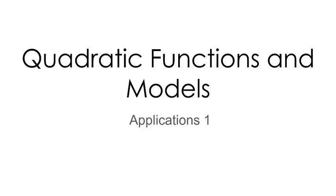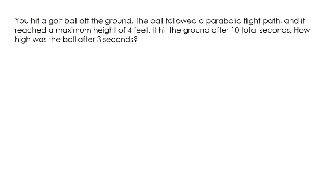In this video we're going to look at some applications or word problems involving quadratics, specifically vertex form. This one says you hit a golf ball off the ground. The ball follows a parabolic flight path, meaning it's a quadratic, and it reaches a maximum height of four feet. It hit the ground after 10 total seconds. How high was the ball after three seconds?